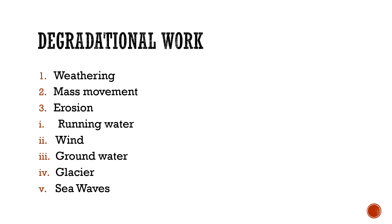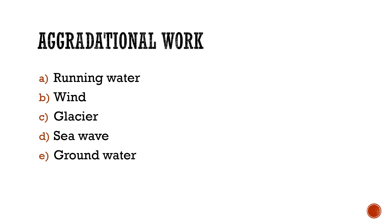Erosion agents perform aggradational work. There are five main agents: running water, wind, ground water, glacier, and seaway. Running water refers to river streams.